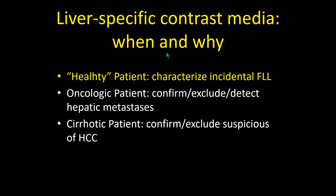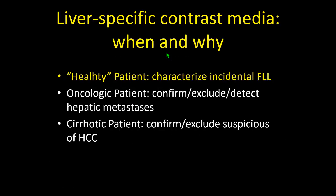When and why should we use liver-specific contrast agents? There are four different situations: incidental focal liver lesions, oncological patients requiring confirmation or exclusion of hepatic metastasis, and cirrhotic patients requiring confirmation or exclusion of HCC. For incidental focal liver lesions — even in oncological patients — most lesions, especially those under one centimeter, are benign: hemangioma, FNH, or hepatic adenoma.